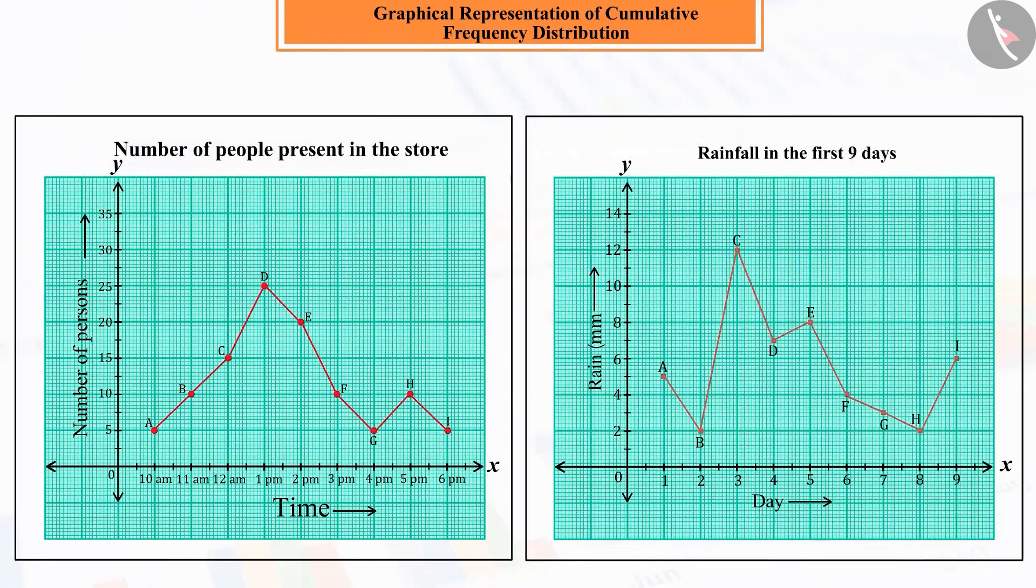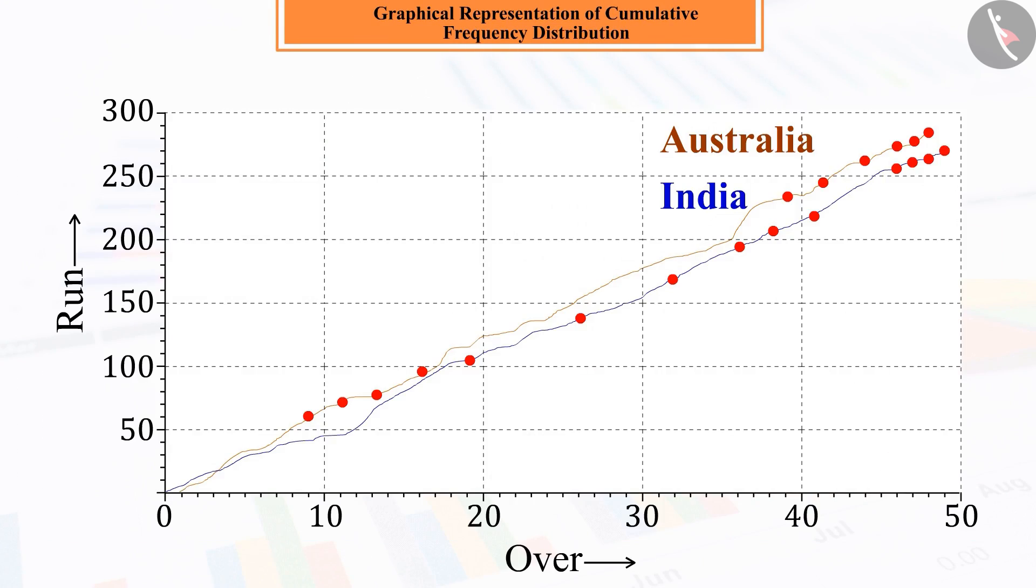We know that we learn concepts better and more quickly through pictures than through words. For example, while watching a cricket match on television, many times we see this type of graph and by looking at the graph, we understand in which over and with what score the player has got out.